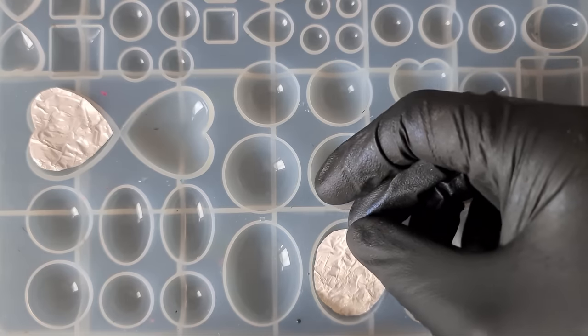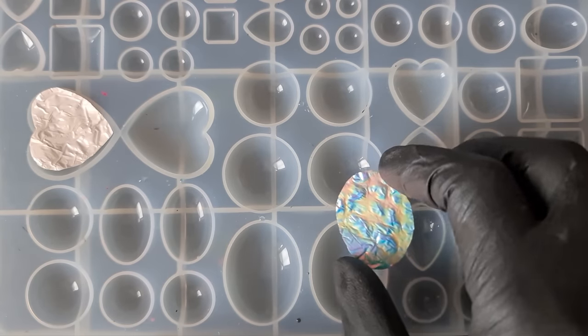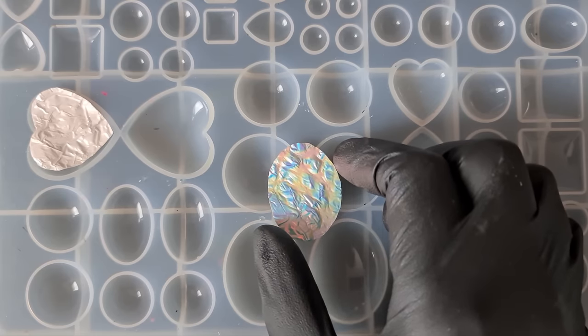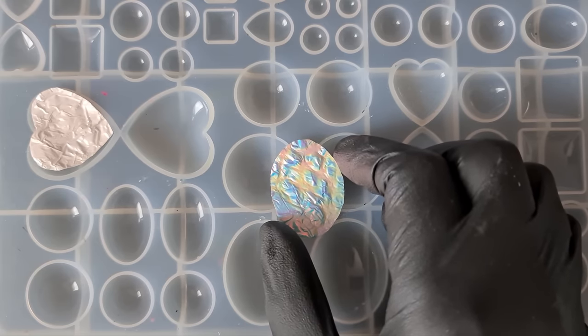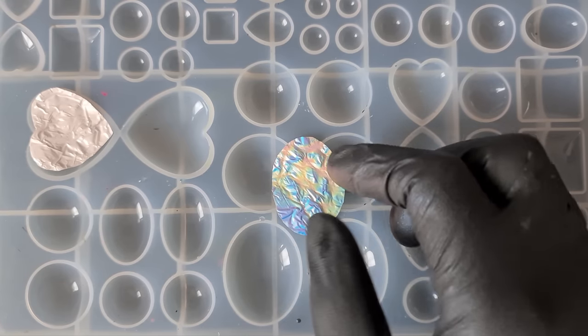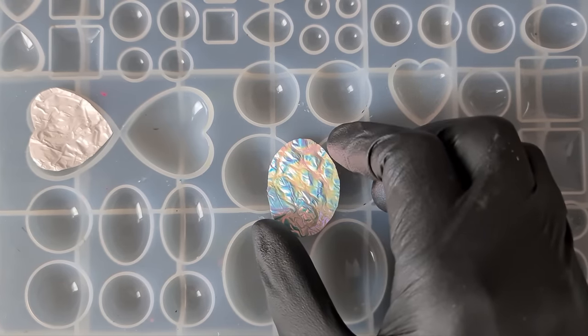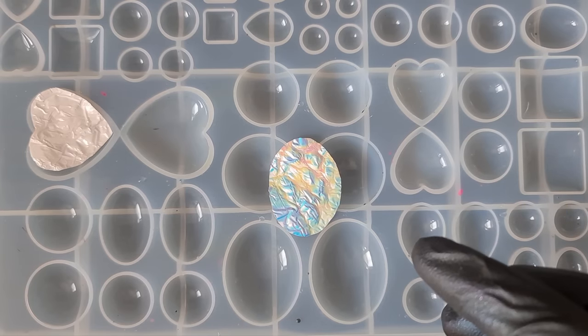And I think the trick is, the tricky part is going to be bubbles, definitely trapping bubbles underneath. But if you were to work on this in, say, an open back bezel, you could do that I suppose. Cut it to the right size, insert it, stick it to the bezel tape, and then pour your resin over the top.